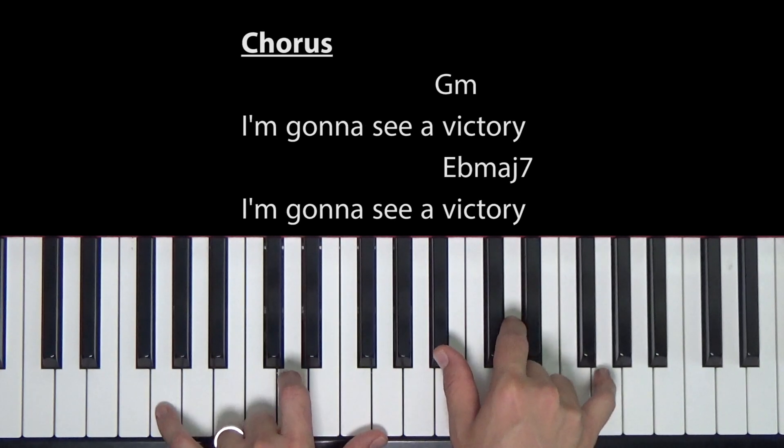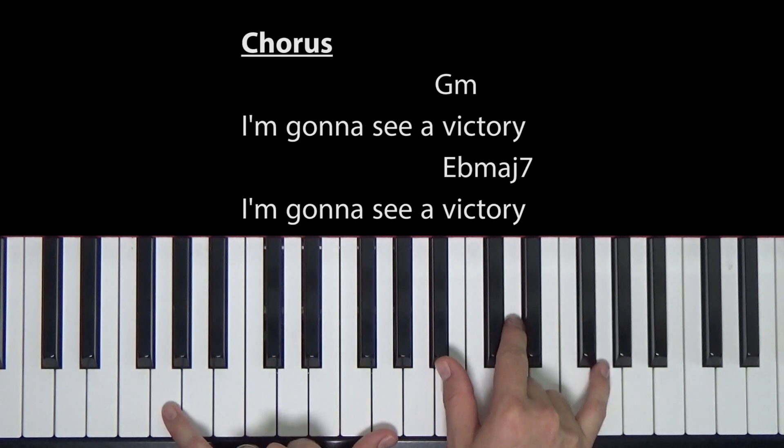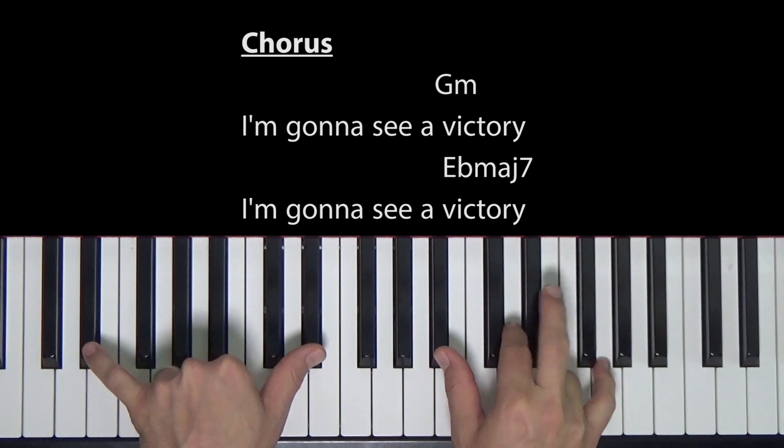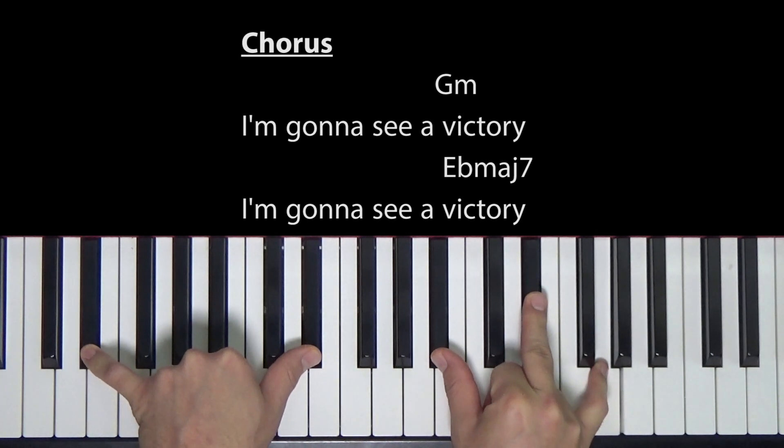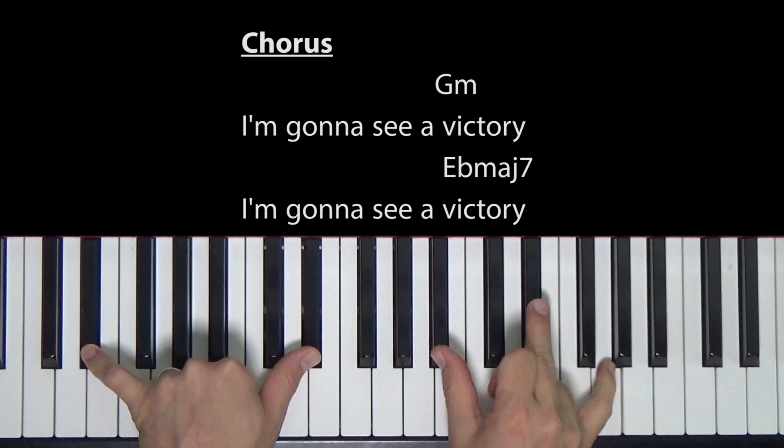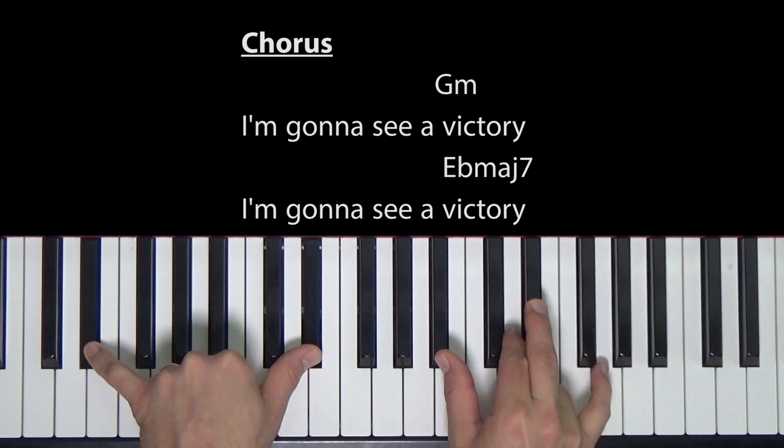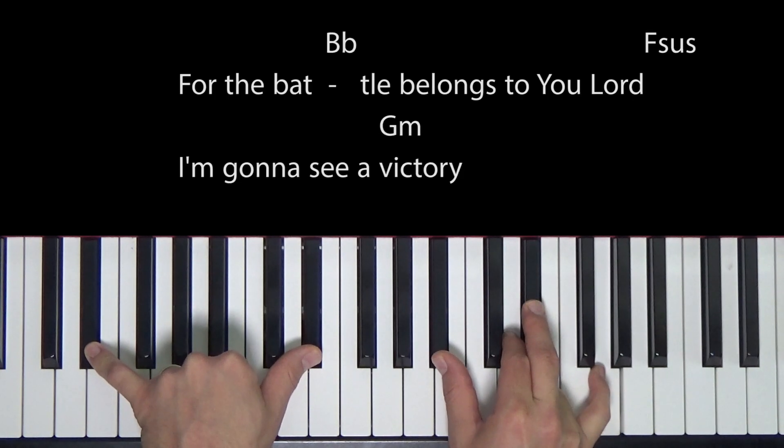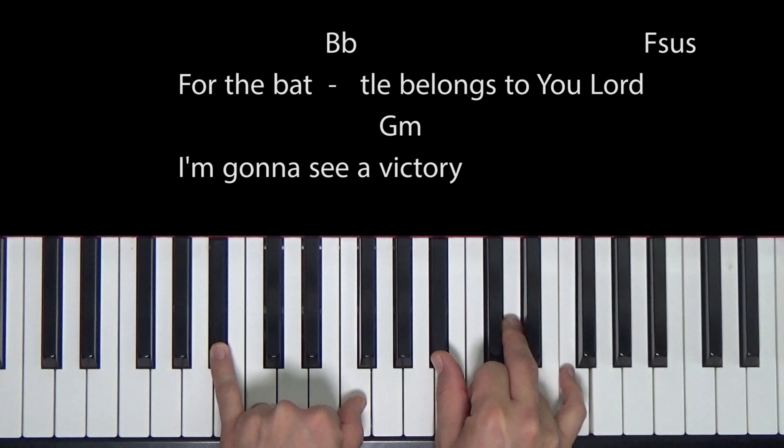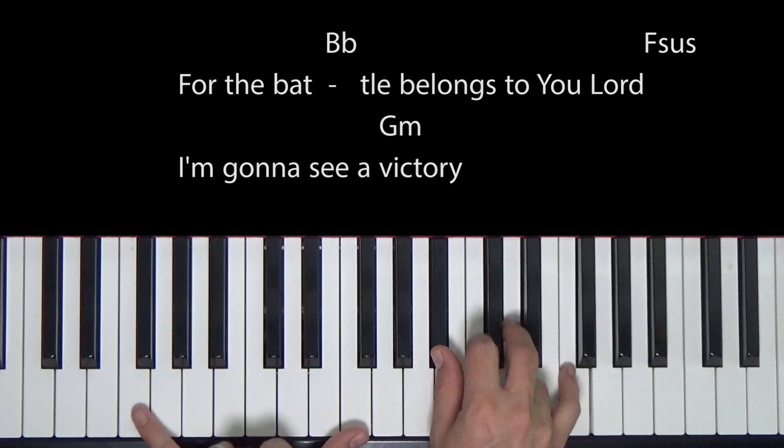All right. So let's look at that chorus. I'm gonna see ya. So same thing, G minor. Victory. I'm gonna see ya. Now this E flat, it says major seven. So all we gotta do to make it a major seven is add in this D here. So take our chord we're already playing, add in this note. Victory. For the battle. To a B flat.